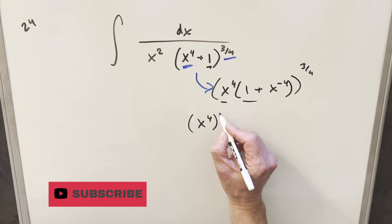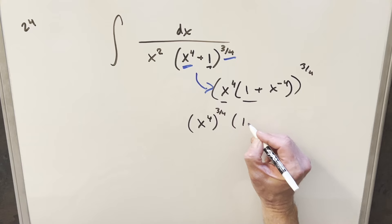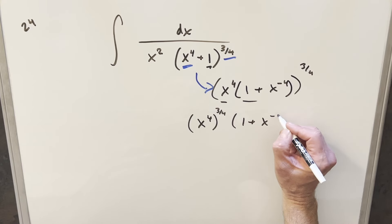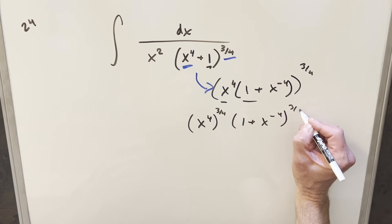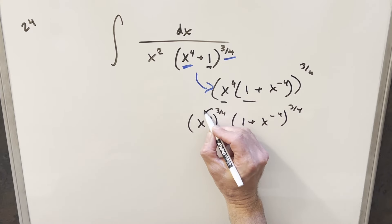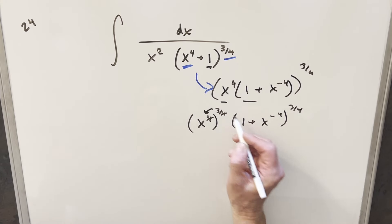We'll have our x to the 4th, and I can put the exponent on this as x to the 4th to the 3/4ths, and then we'll have this other piece, 1 plus x to the minus 4, to the 3/4ths. But then by exponent properties, I can just multiply this in, the 4s are going to cancel, and this is just going to become x cubed.